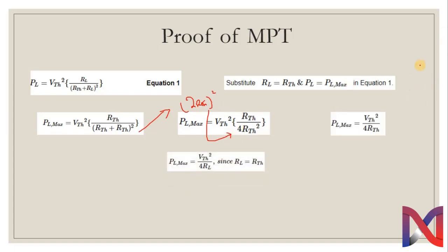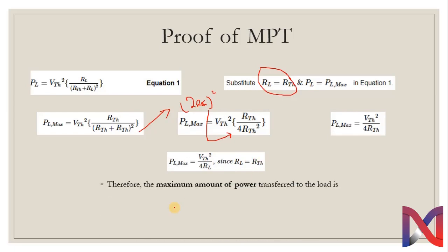The value of P_L_max will be V_Thevenin² divided by 4×R_Thevenin. Since we put R_L equal to R_Thevenin, we can put back R_L in place of R_Thevenin. Therefore, the maximum amount of power transferred to the load is P_L_max = V_Thevenin² / (4×R_L) or equivalently V_Thevenin² / (4×R_Thevenin).